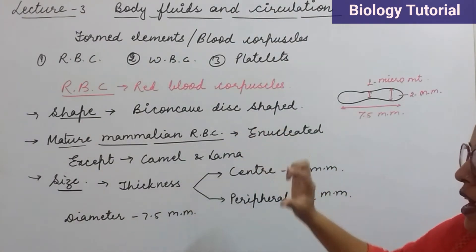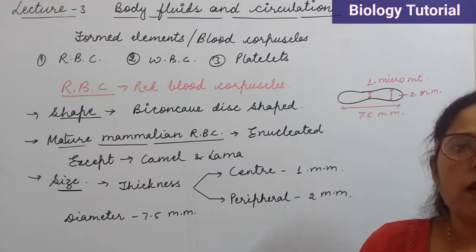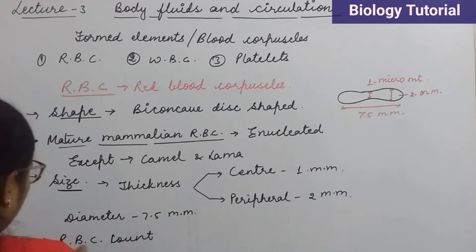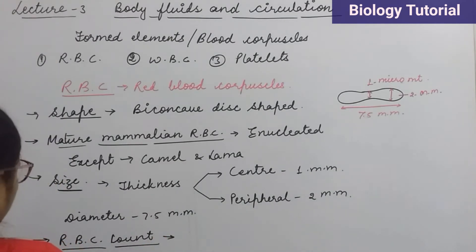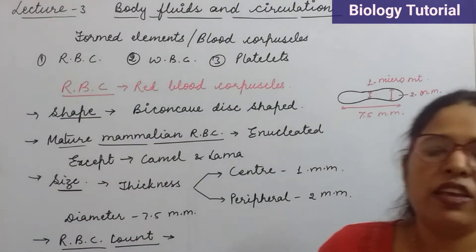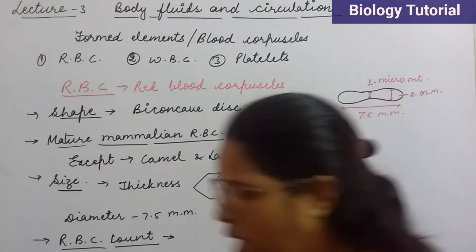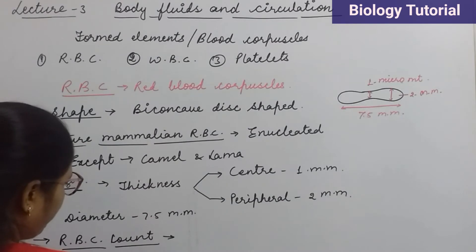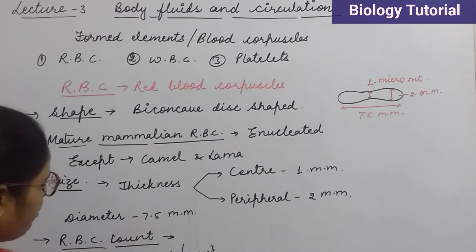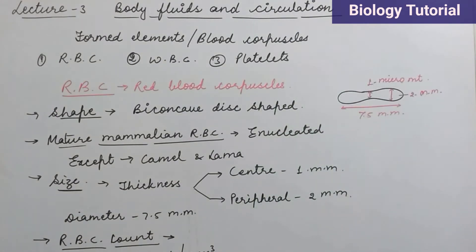How many RBCs are present in the blood? That is called the RBC count. The RBC count is different in males and females. In males it is about five point five million per cubic mm of blood, and in females it is about four point five million per cubic mm of blood. This is the RBC count in males and females.